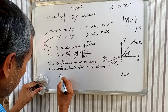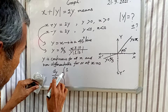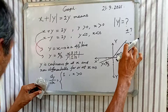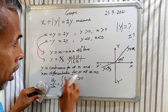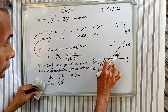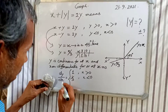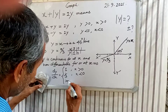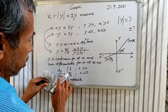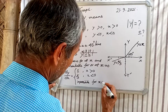Now dy by dx equal to 1 if x greater than 0. Meaning here, dy by dx is 1 if x greater than 0, and dy by dx is 1/3 if x less than 0. At x equal to 0, dy by dx is impossible — it is non-differentiable there.